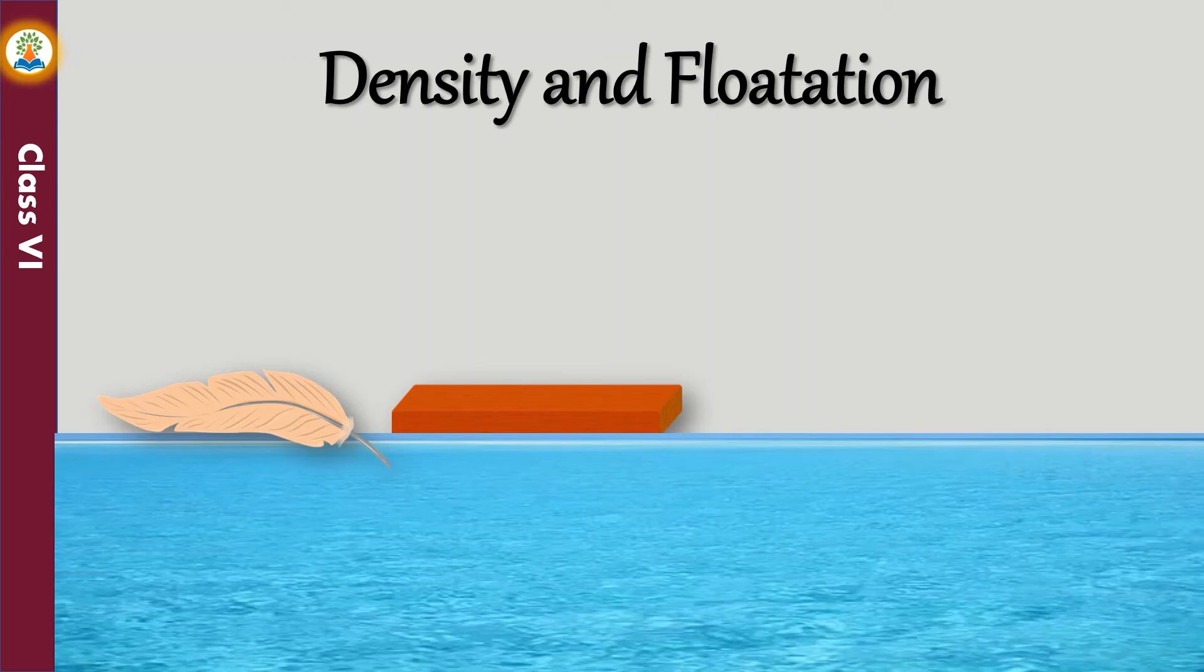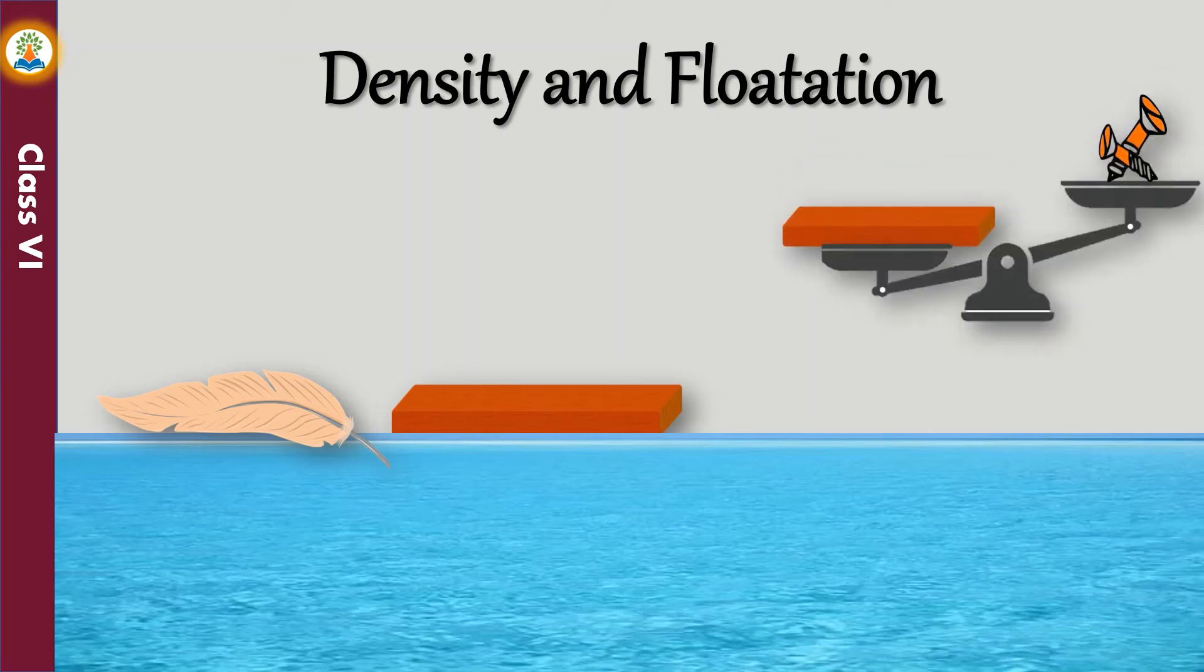This happens because heavier objects sink whereas lighter objects float. But a wooden block may be bigger and heavier than the tiny iron nail. So what decides whether an object will float or sink in water?